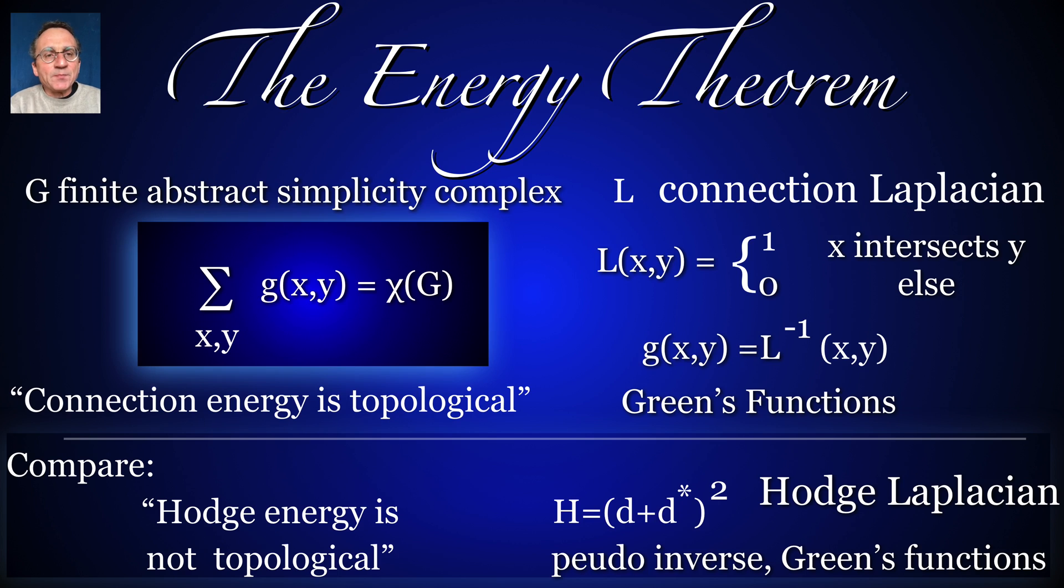First the Energy Theorem. A finite abstract simplicial complex is a finite set of non-empty sets, closed under the operation of taking finite non-empty subsets. The connection Laplacian encodes the incidence of different sets. The matrix is unimodular, its inverse is therefore integer-valued. The Energy Theorem tells that the sum of the matrix entries g, think of them as potential energy values, is the Euler characteristic of the complex.